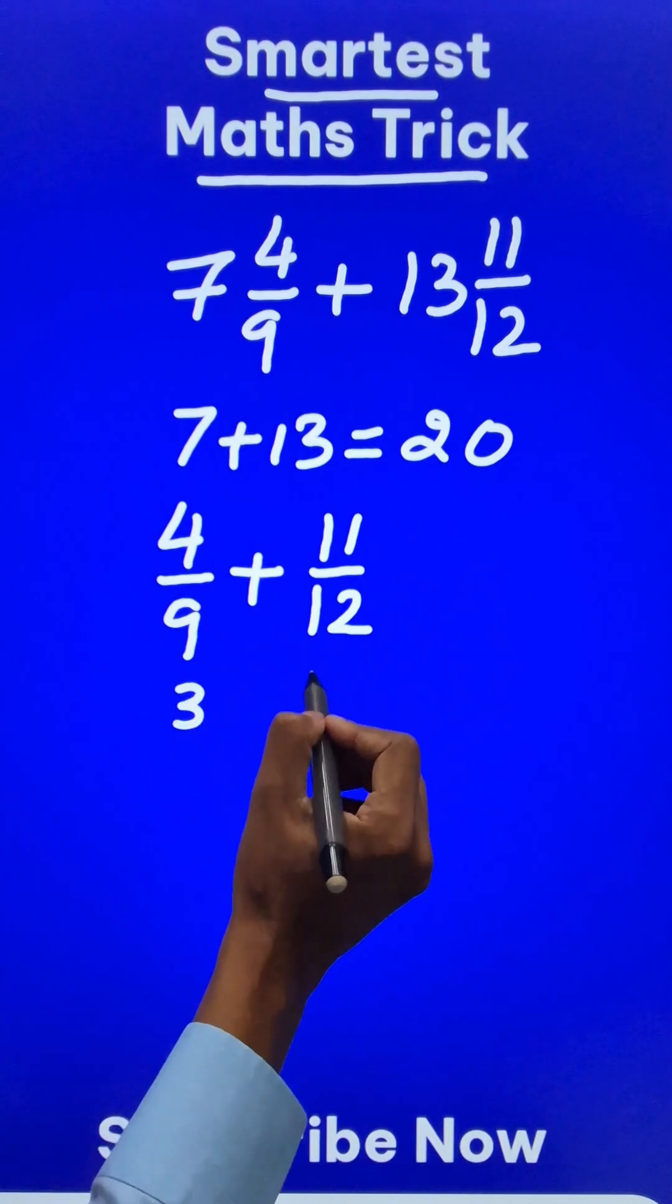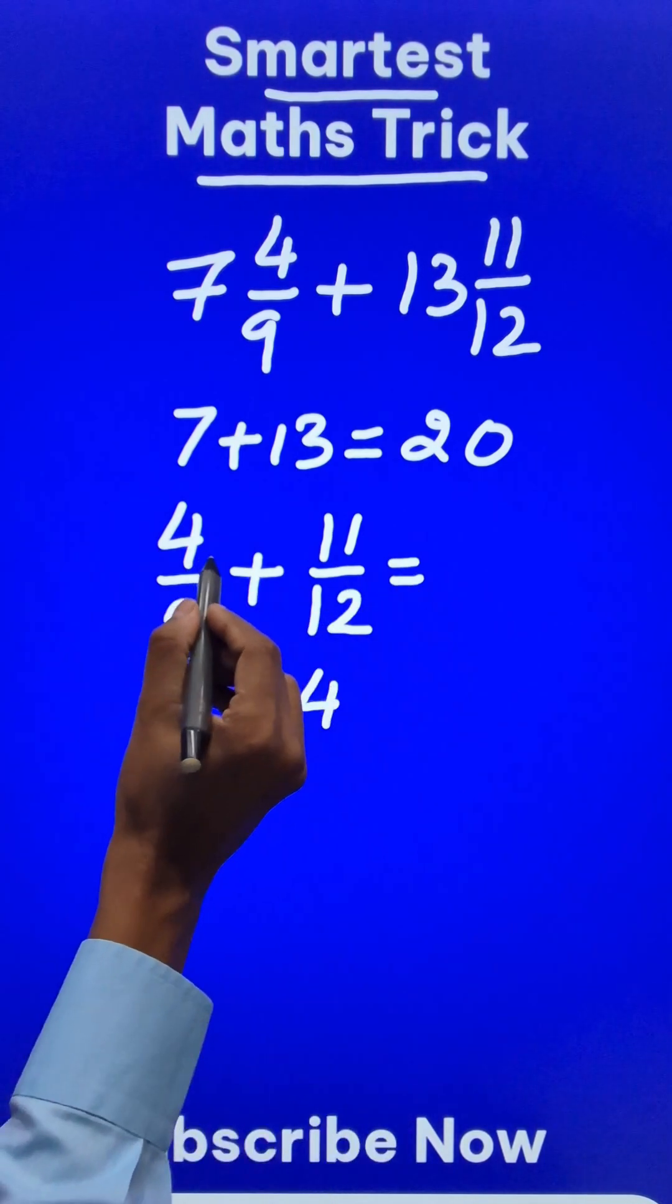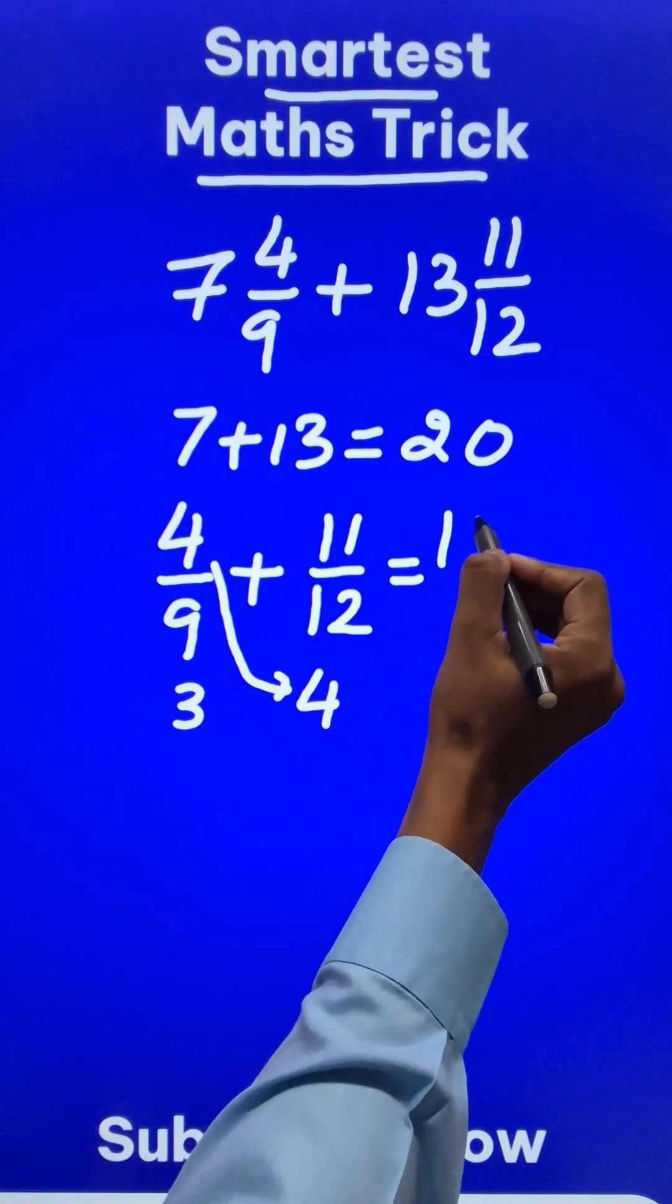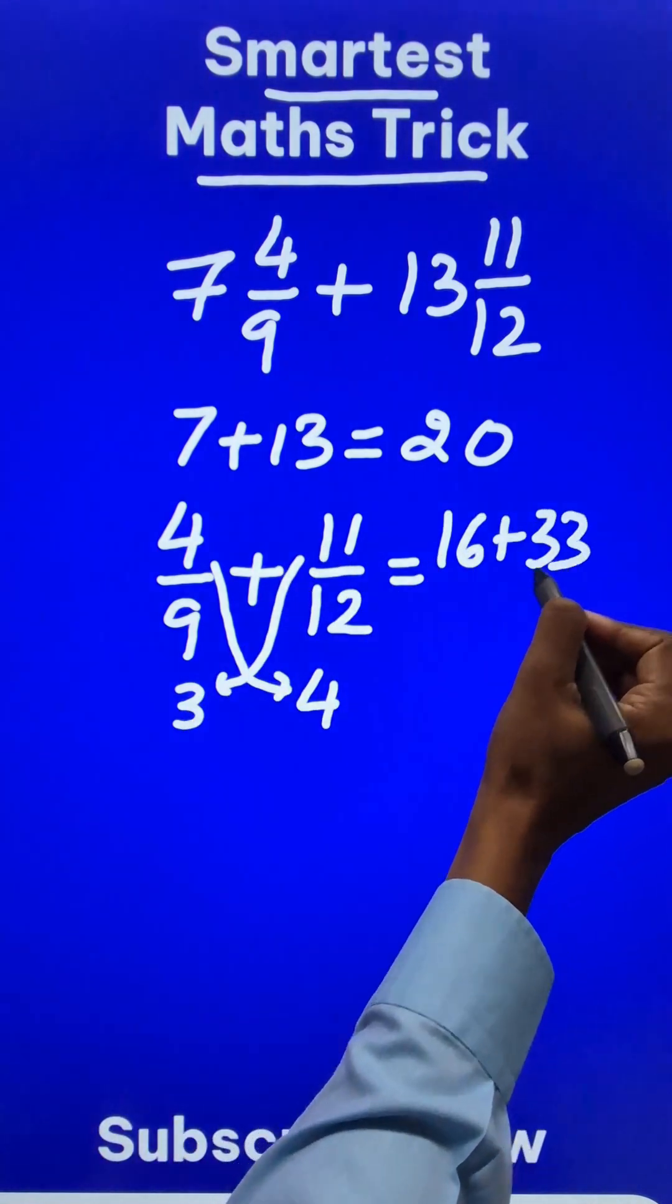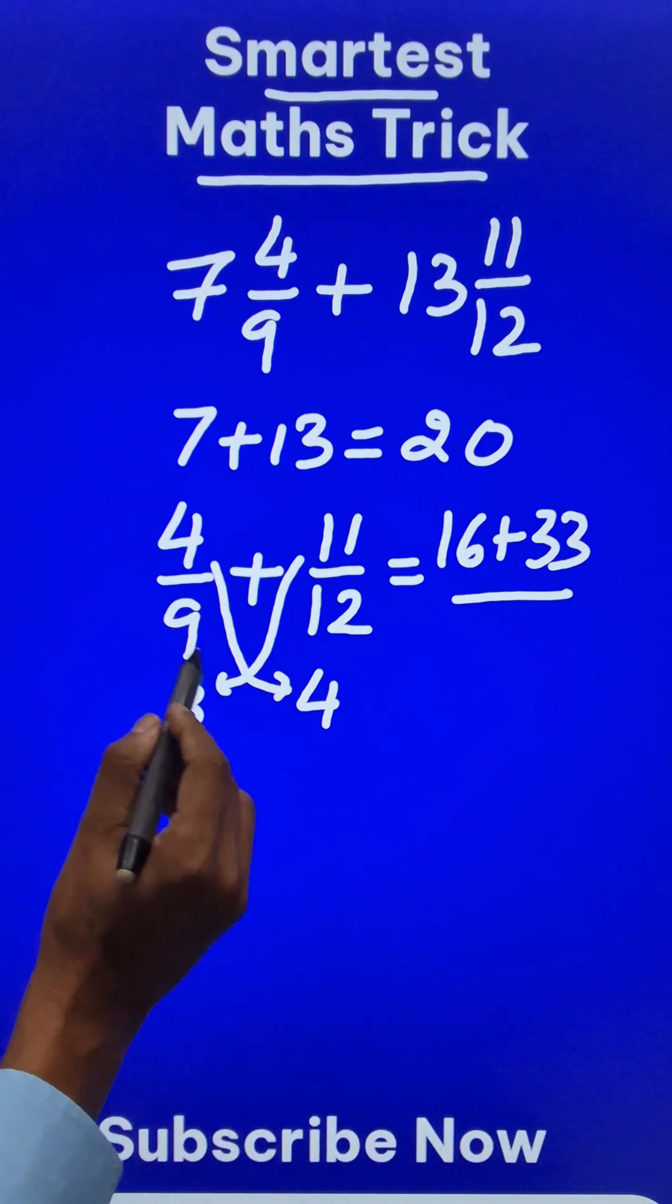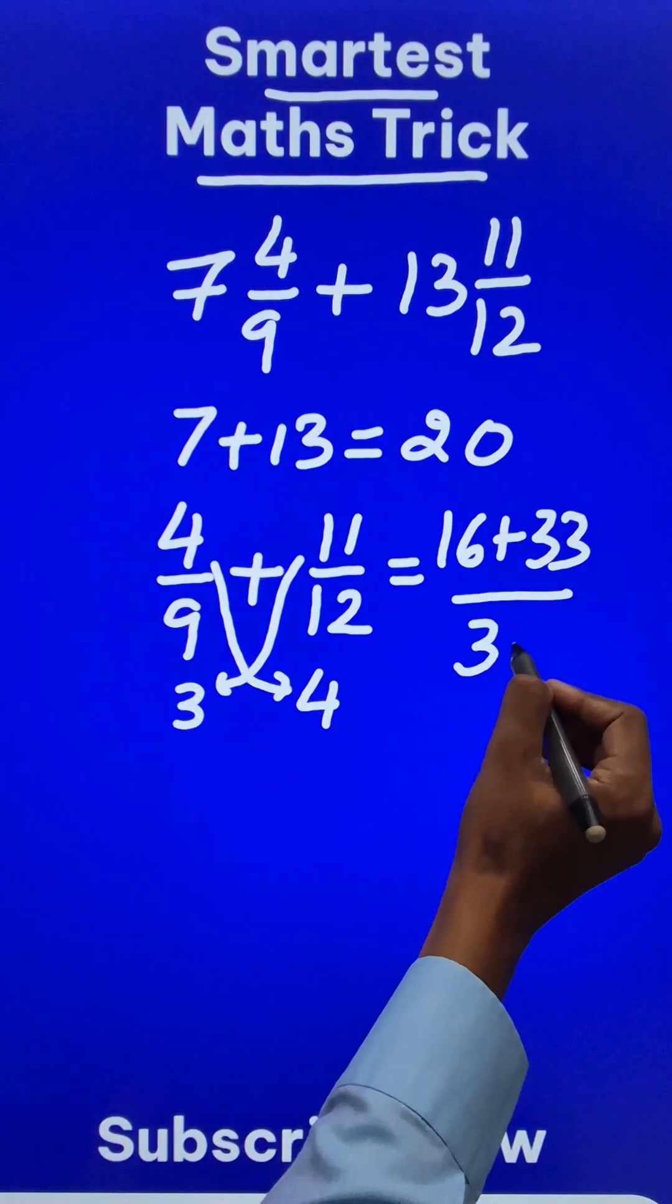3 times 3 is 9 and 3 times 4 is 12. Likewise, you just need to multiply like this. This gives you 16 plus multiply like this. 11 times 3 is 33 and divided by either 9 times 4 or 12 times 3. That gives us 36.